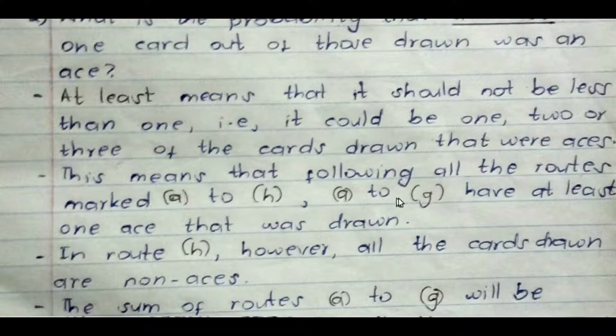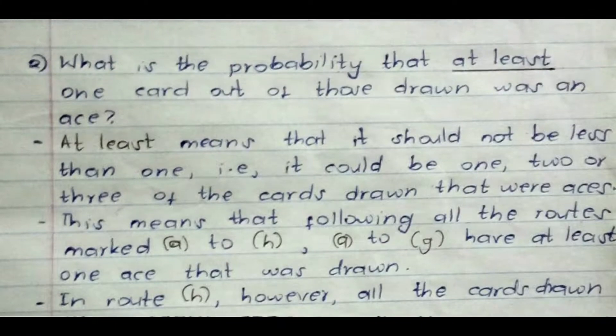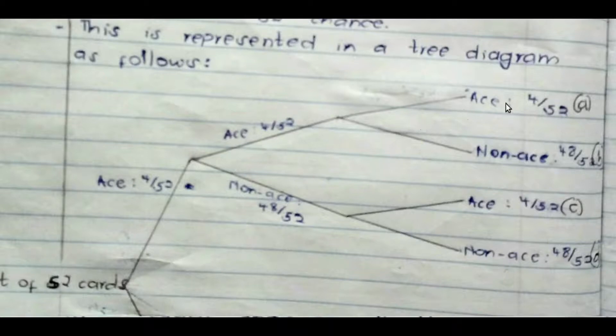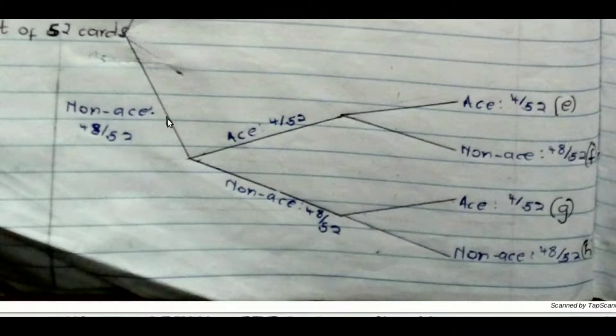This means that following all the routes marked A all the way to H, A to G qualify. If we pick the first route, all three are aces. We pick the second route, the first two are aces, but then we miss the third. We pick the other route, we got it here, we didn't get it here, and then we get it here. Or we get it here, we don't get it here, we don't get it here. Or we miss it, and then we get it, and we get it. Or we miss it, we get it, we miss it. Or we miss it, we miss it, but then we get it. But we don't pick this last route where we miss, miss, miss. We did not miss all three times. At least we got one.